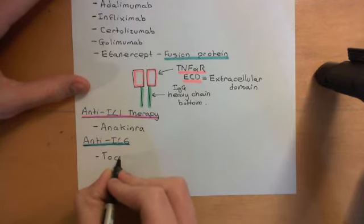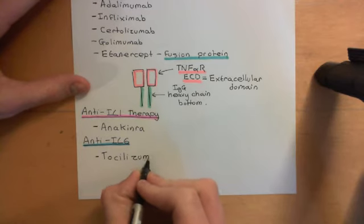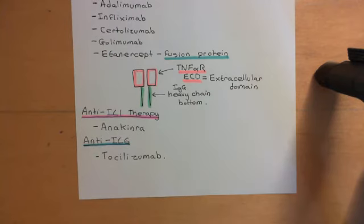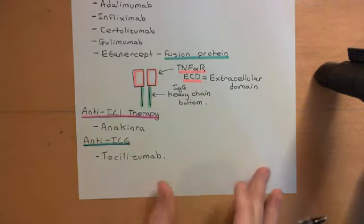The monoclonal antibody against interleukin-6 is called tocilizumab. It binds to interleukin-6 molecules, sequesters them, neutralizes them, and stops them from having any functional effect. This has a very potent anti-rheumatoid effect, which is further evidence that interleukin-6 has a bigger role than previously understood in the pathogenesis of rheumatoid arthritis.